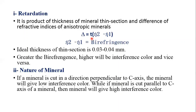In other words, the product of thickness of a mineral section and birefringence is called retardation. Retardation has a direct relation with interference color. If retardation is greater, interference color will be higher. If retardation is smaller, interference color will be lower.